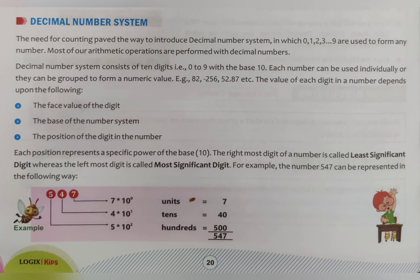The decimal number system consists of 10 digits — from 0 to 9 — with the base 10. The base represents the count of digits used, and our total number of digits is 10, so the base is 10.